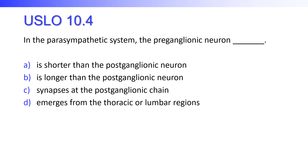In the parasympathetic system, the preganglionic neuron is shorter than the postganglionic, longer than the postganglionic, synapses at the postganglionic chain, or emerges from the thoracic or lumbar regions? In the sympathetic system, the preganglionic neuron is very short because it just leaves the spine and synapses right at the ganglia, and the postganglionic neuron is long. The opposite is true in the parasympathetic system — the preganglionic neuron is the longer one.